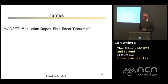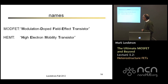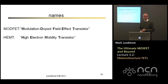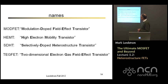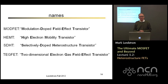People have used different names for this device. Some call it a modFET because it relies on modulation doping. Some call it a HEMT — high electron mobility transistor — because modulation doping leads to enormously high mobilities. Some call it a selectively doped heterostructure transistor. Some call it a TEGFET — two-dimensional electron gas field effect transistor. They are all different names for the same device.